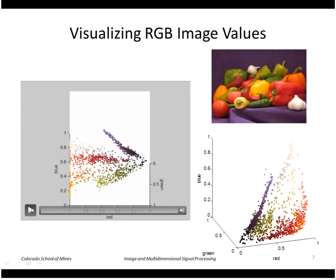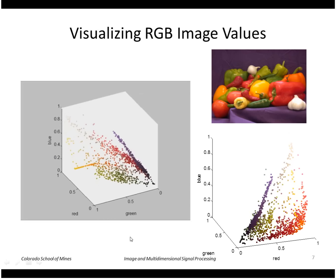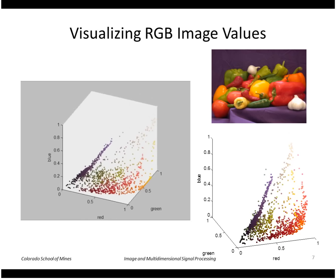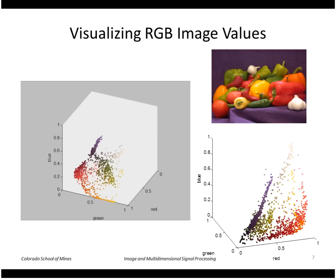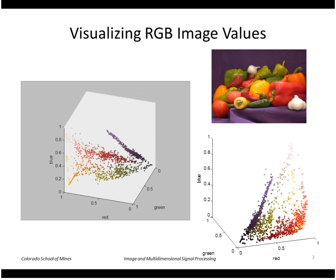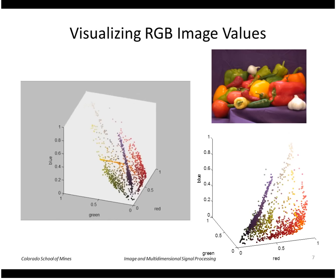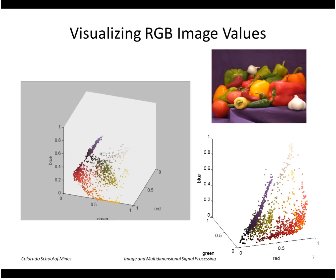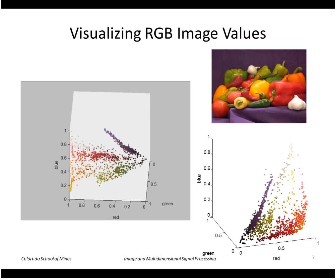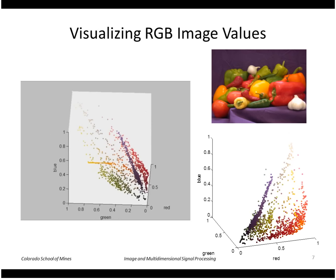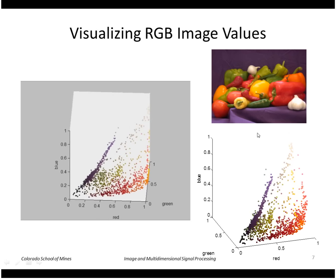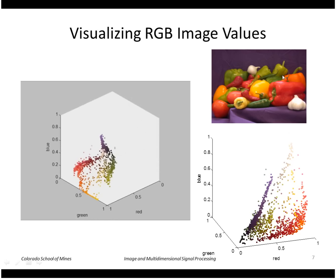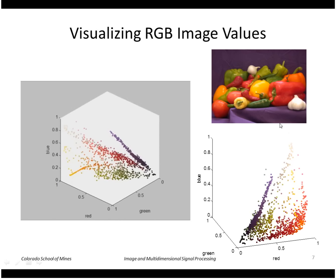This is an interesting way to visualize the color values. I've plotted the pixels from this image in the color cube — just a subset, not all of them. You can see the pixels don't occupy the entire color space; they tend to cluster together. For example, the dark blue in the background forms a cluster, the green values form a cluster, and so forth.